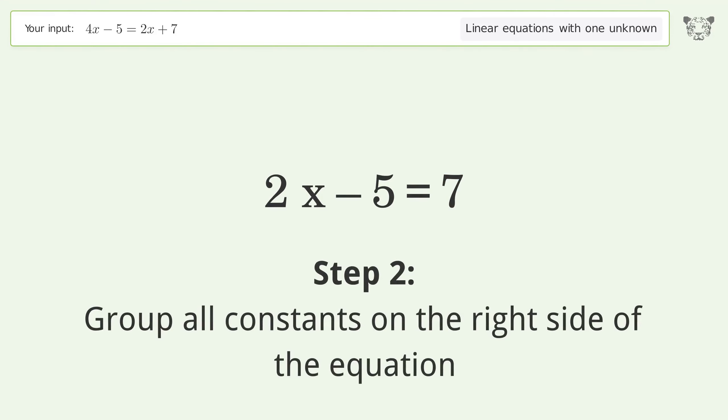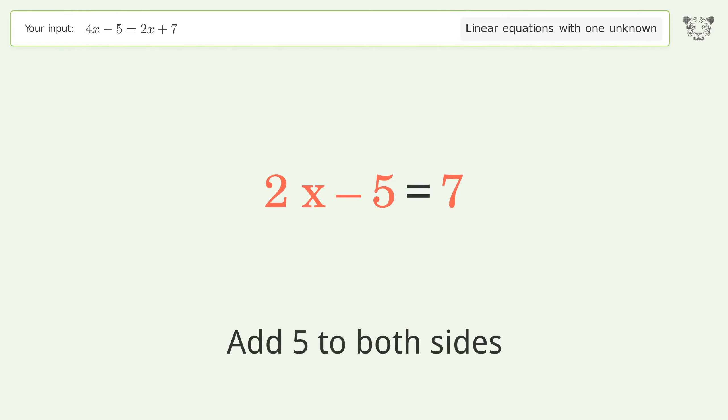Group all constants on the right side of the equation. Add 5 to both sides. Simplify the arithmetic.